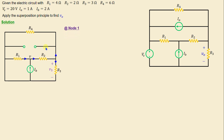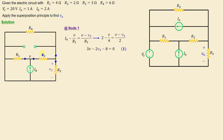At node 1, we can write: Ib + (V / R1) = (V − V3) / R2. Replacing Ib, R1, and R2 with their numerical values and simplifying, we obtain the first equation: 3V − 2V3 − 8 = 0.